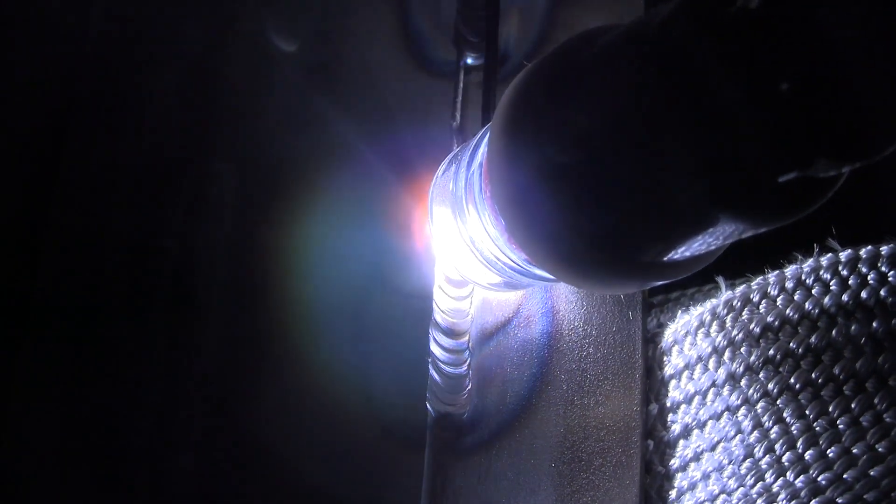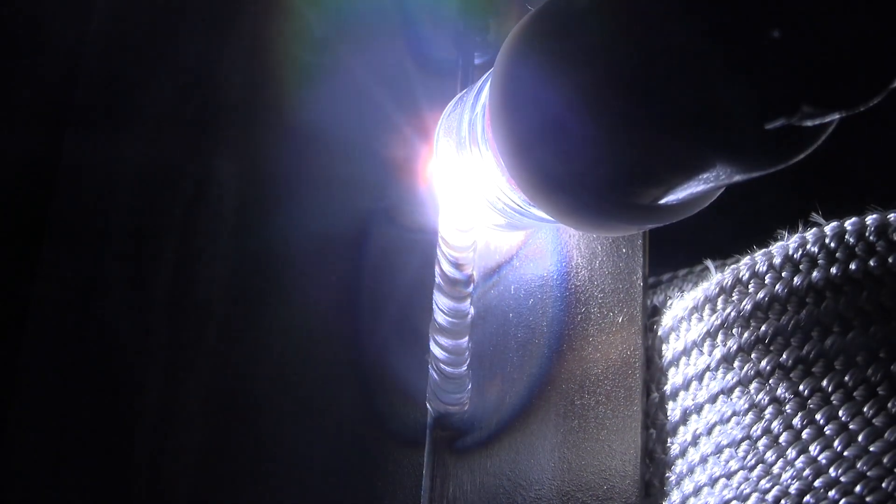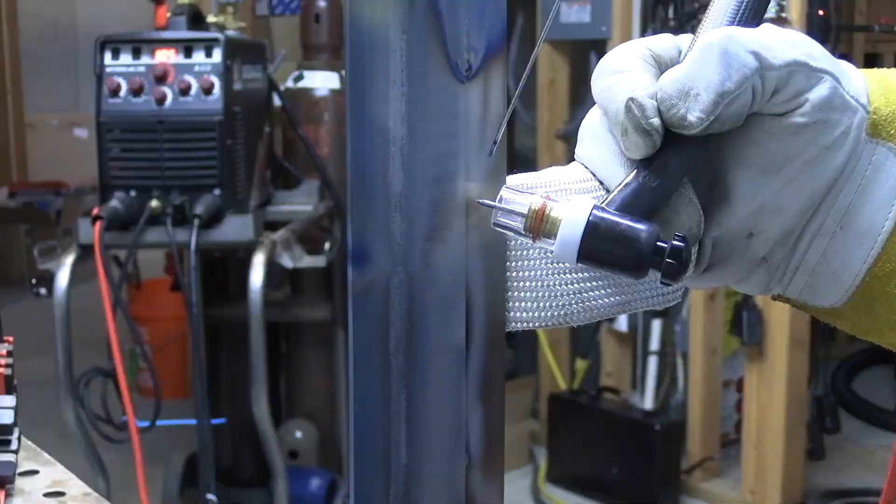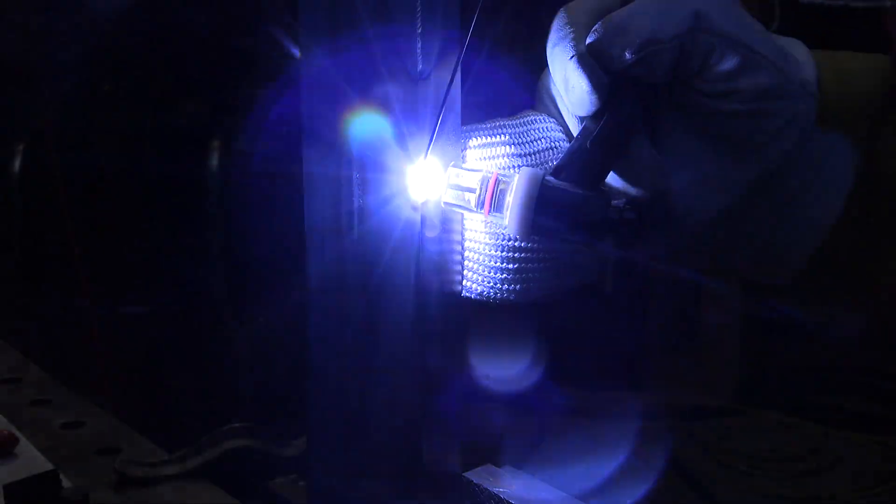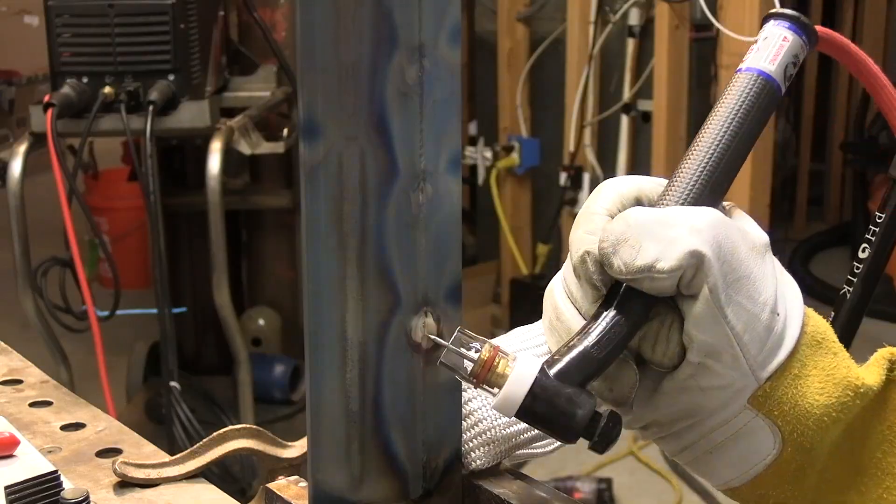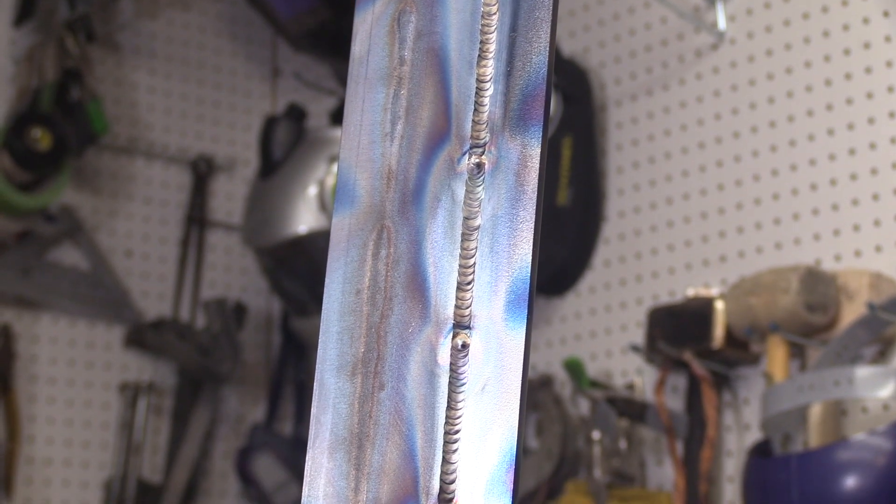And really, I just use that because that's what I had plenty of. Couldn't really tell much difference between ER70S2 and 6 on this. For me, the most difference I can tell between the two is when I'm penetrating all the way through something and the backside is exposed to air. Then it seems like the six works a little bit better.